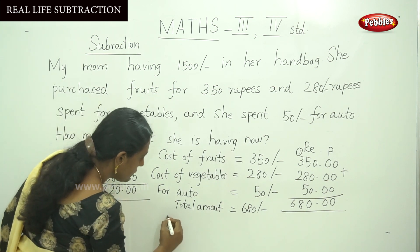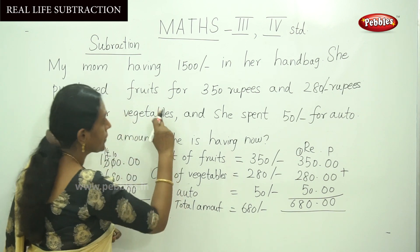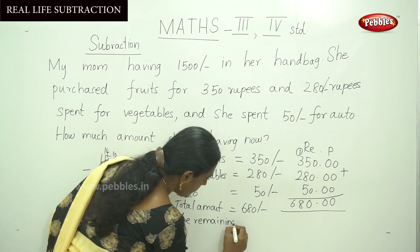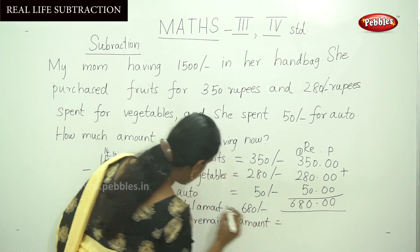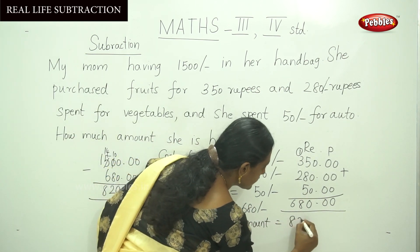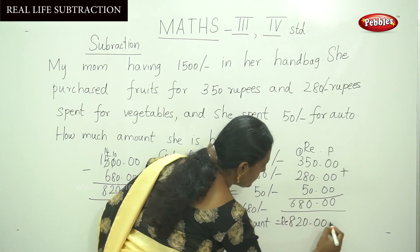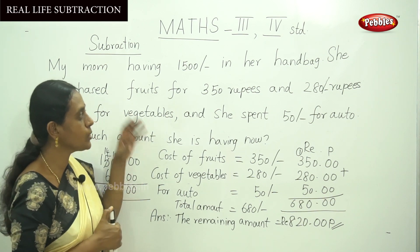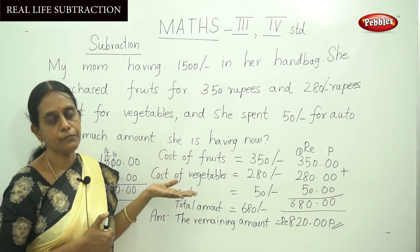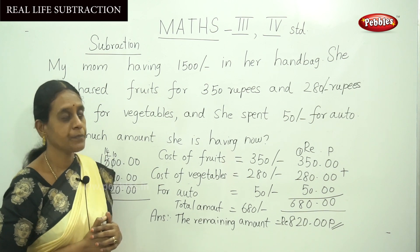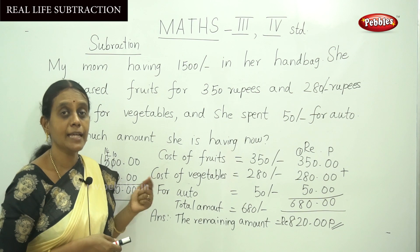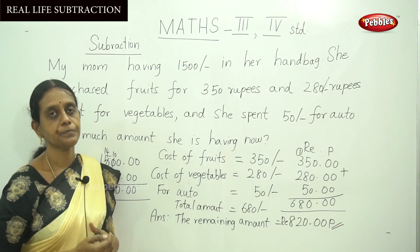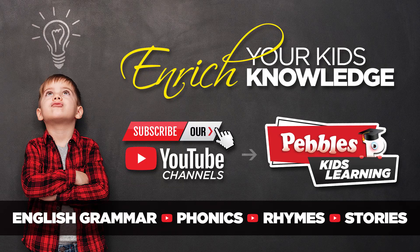The final answer: the remaining amount she is having now is rupees 820. This is a simple way — first understand the question and situation. This is the real life application of subtraction. Thank you.